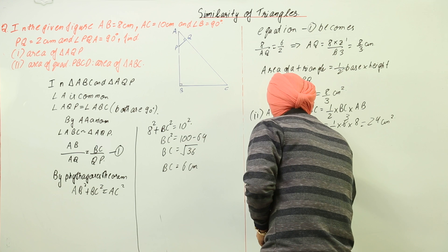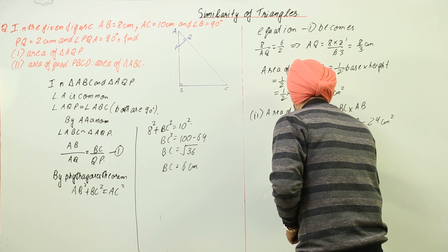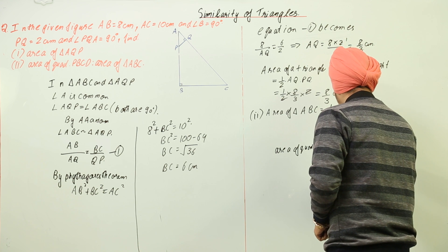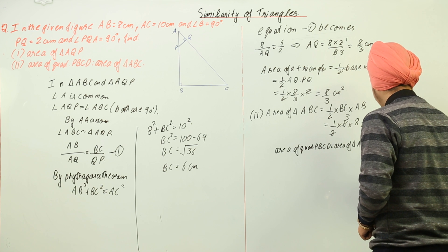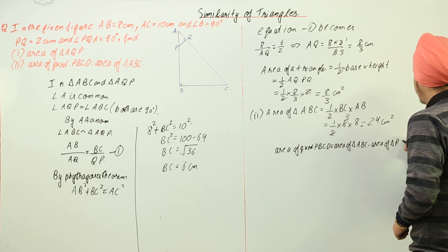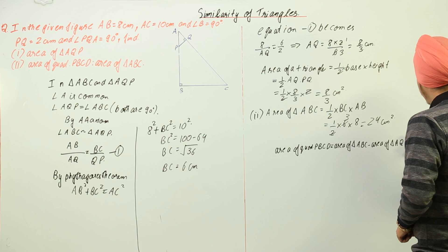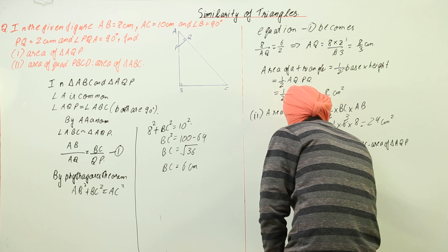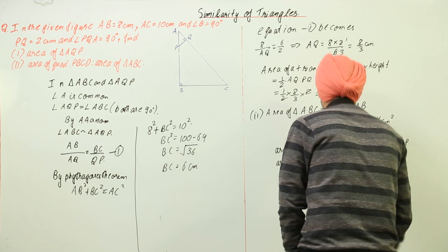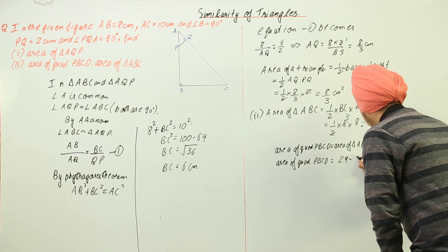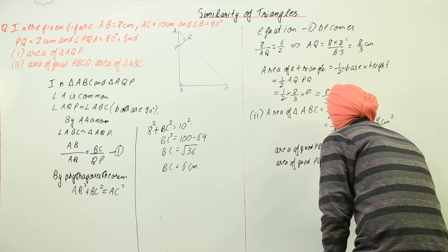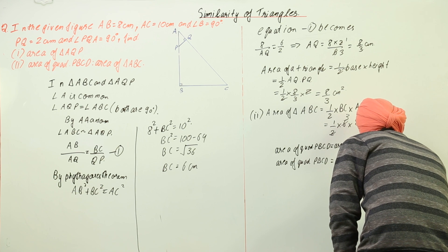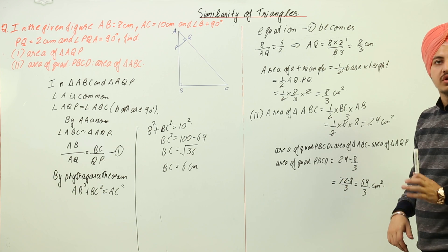The area of quadrilateral PBCQ equals the area of triangle ABC minus the area of triangle AQP, which is 24 minus 8/3. This equals 72/3 minus 8/3, which equals 64 by 3 centimeter square.